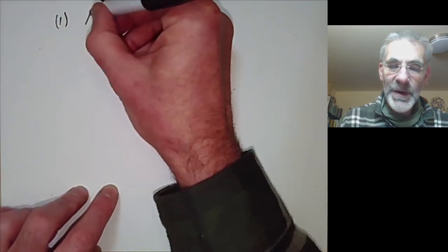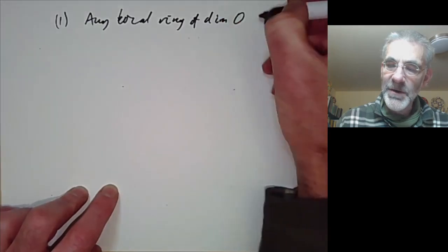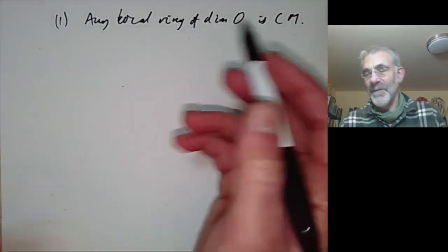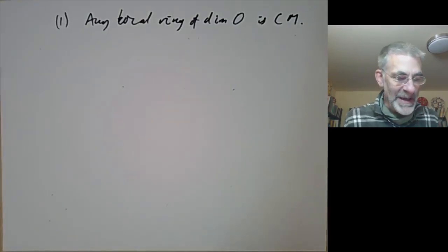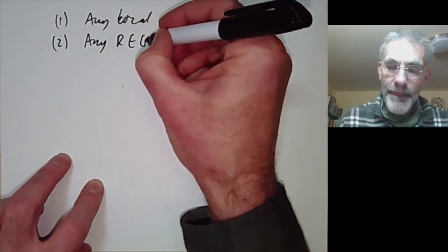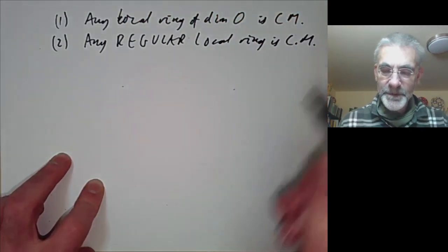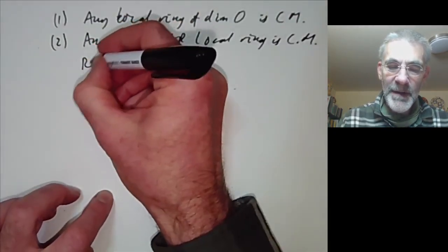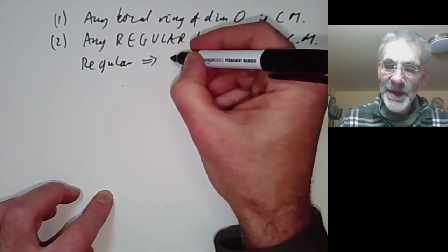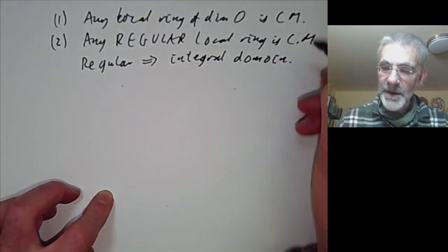Let's give a few examples of rings that are or aren't Cohen-Macaulay. First, any local ring of dimension zero is obviously Cohen-Macaulay because we can find a regular sequence of length zero — just the empty sequence. Any regular local ring is Cohen-Macaulay. To see this, we notice that regular implies the ring is an integral domain, at least for local rings — that's not true for non-local rings.